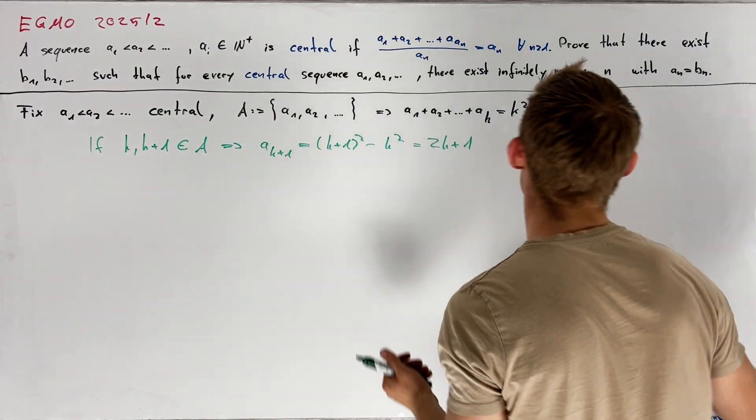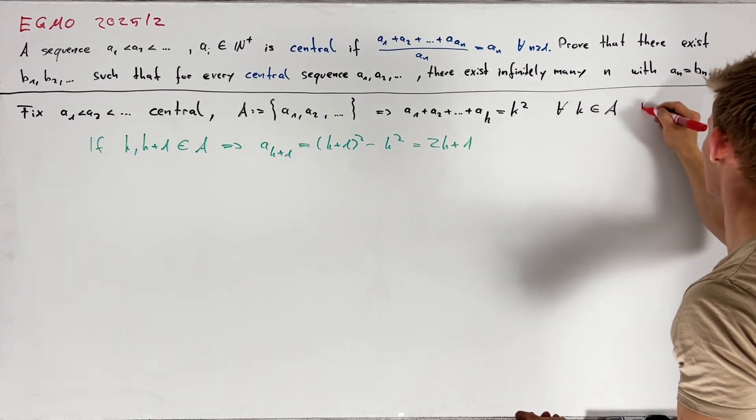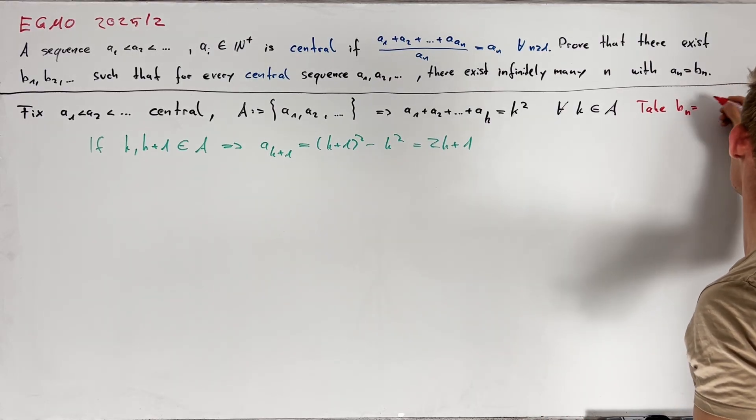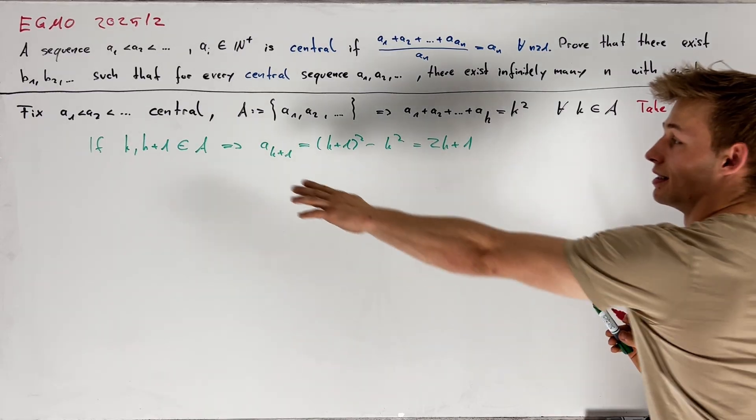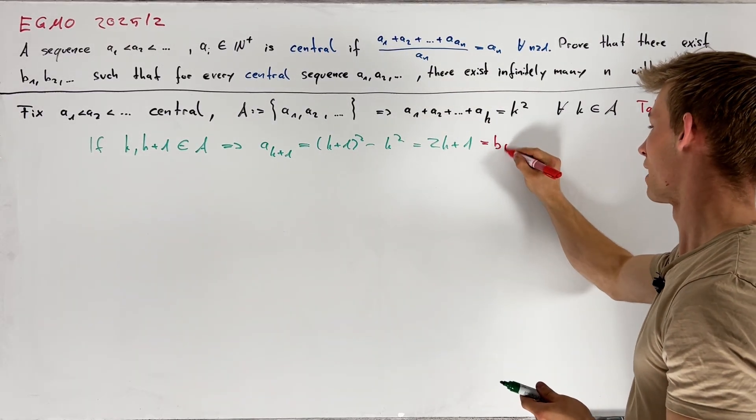This motivates us to take b just as the sequence of all odd positive integers. So take bn equal to 2n minus 1 and then we directly see that in this case a_{k+1} is equal to b_k.